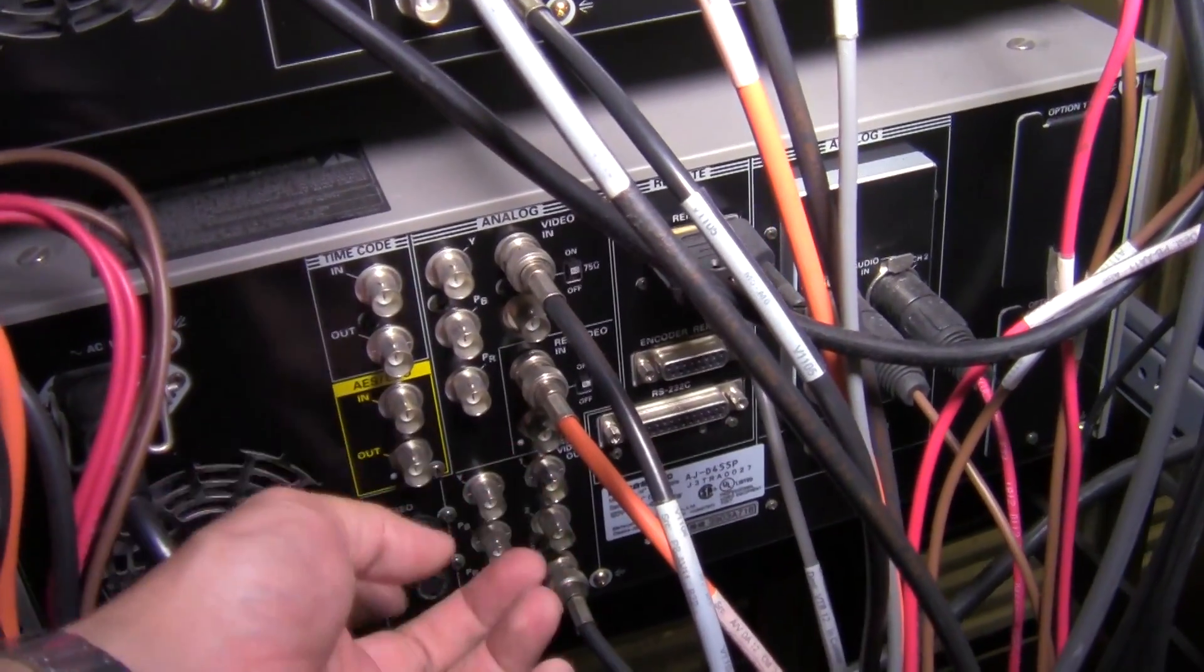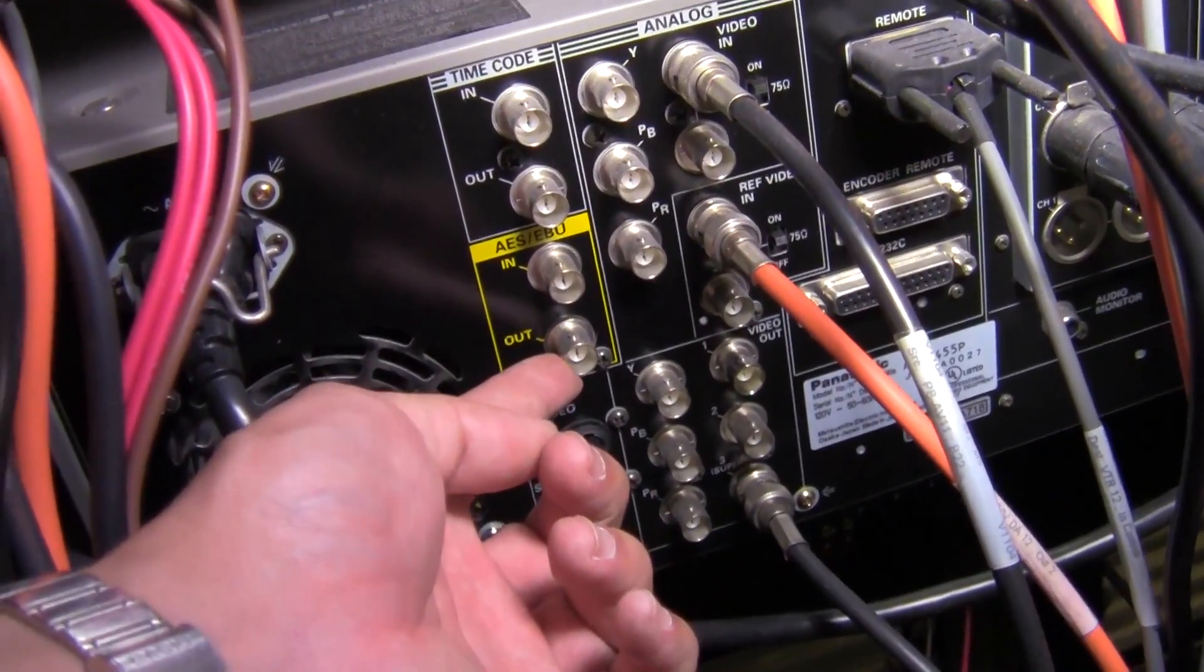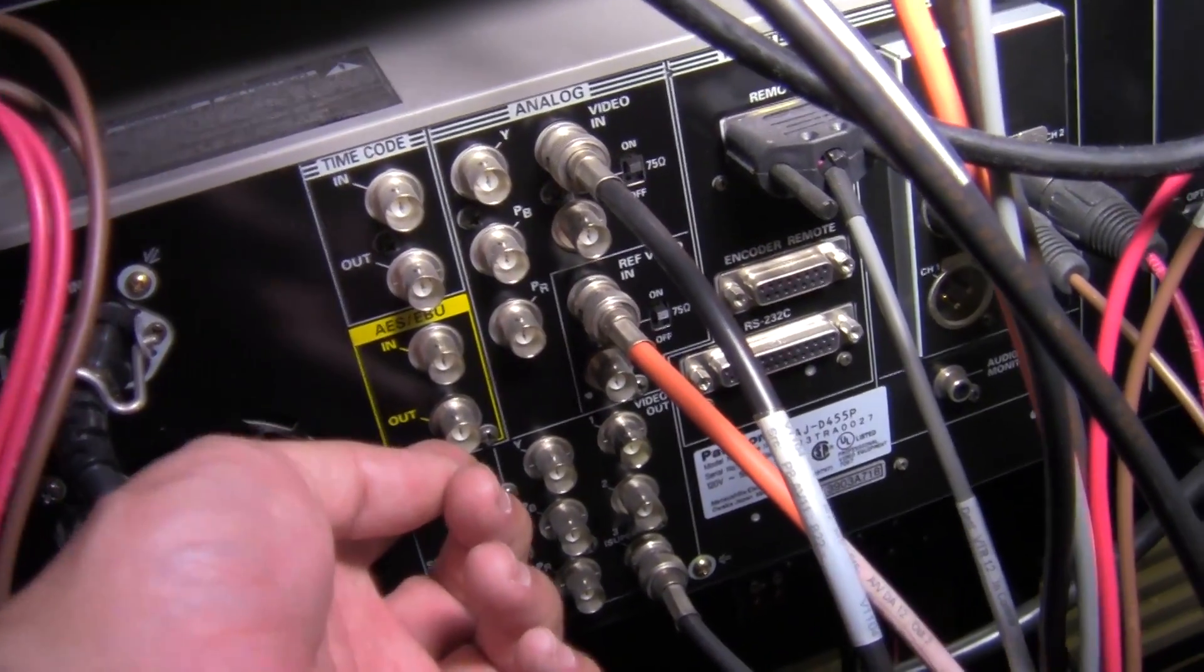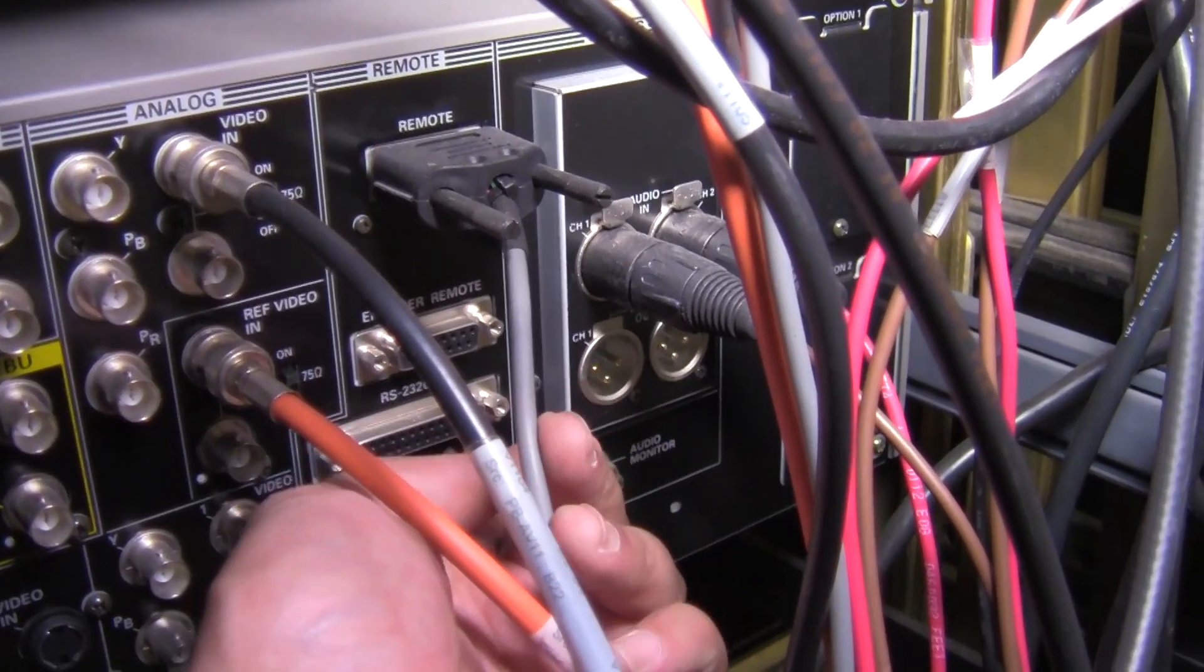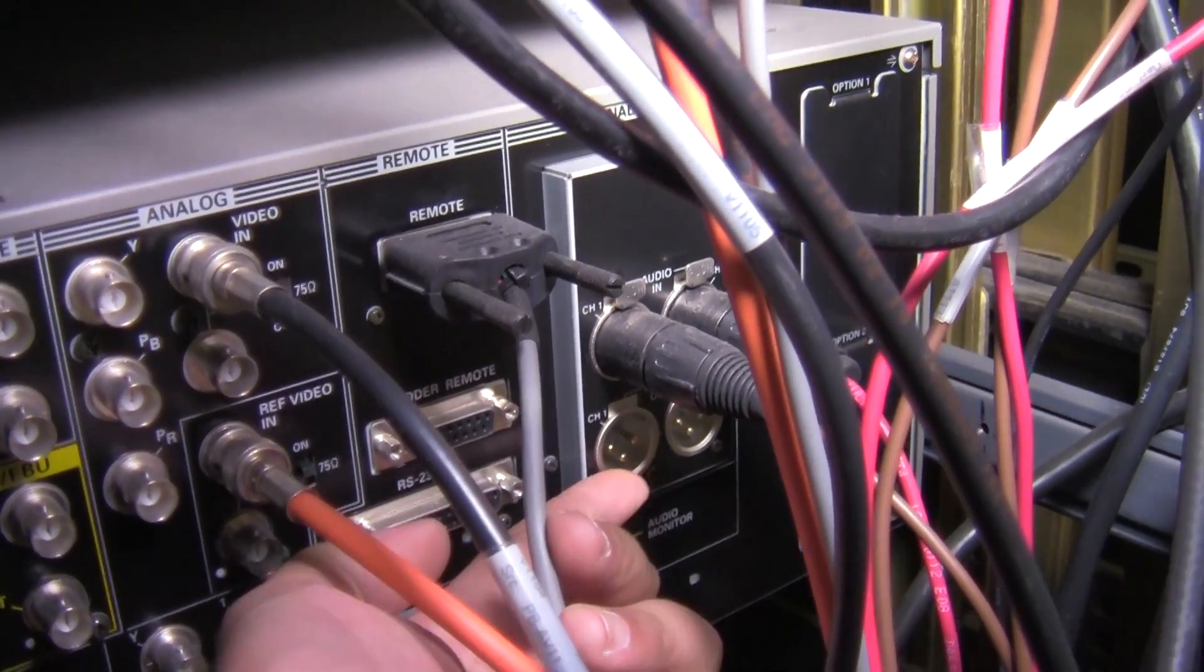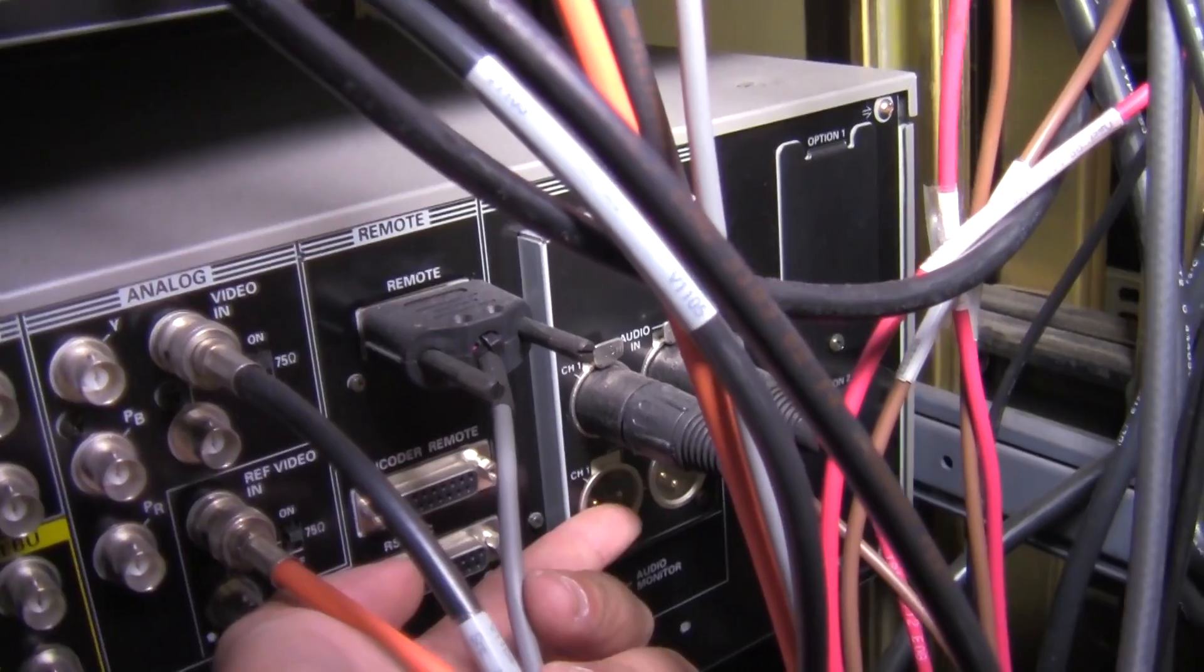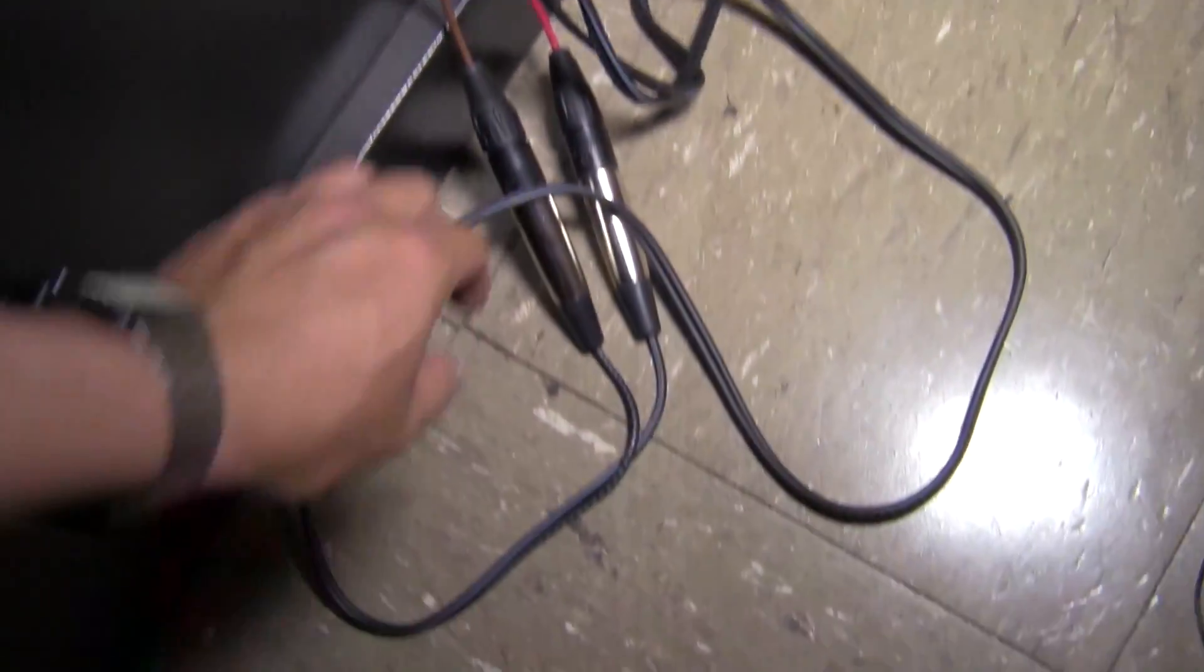So this VHS player had a video out which is right down here. That was the video out. That's where I took the BNC connection. And then right below these connections right here is the XLR cables that was the audio out.